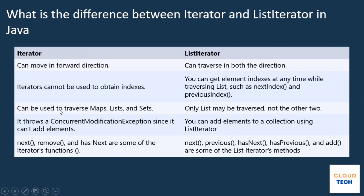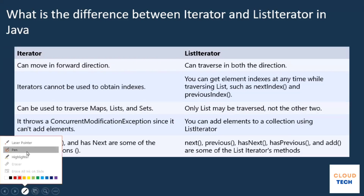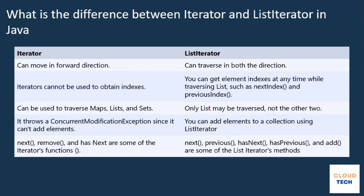Using iterator, you can traverse maps, lists and sets. But using list iterator, you can only traverse through a list — you cannot traverse through maps and sets. As the name suggests, this is a list iterator. Also, if you try to add a value using iterator, it throws ConcurrentModificationException. But with list iterator, you can easily add values while iterating.